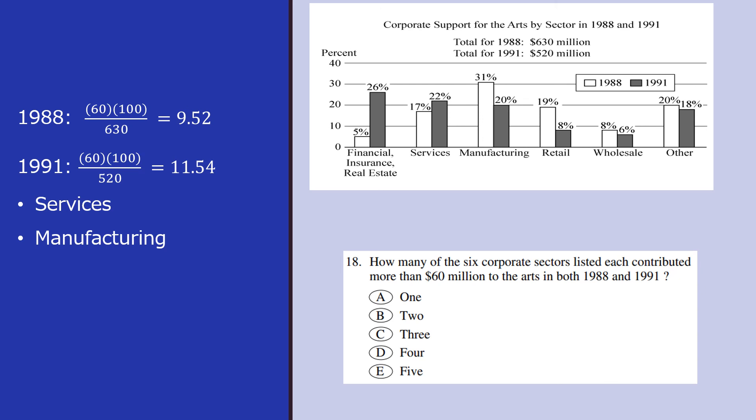So we can see services falls under this category, manufacturing falls under this category, other also falls under this category. So there are three which fall under this list where each contributed more than 60 million. So we are trying to find what 60 million is for 1988 and 1991. One is 9.52, the other one is 11.54. We are looking for values greater than that. So we have services, manufacturing and other.